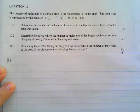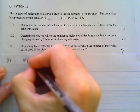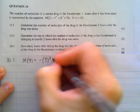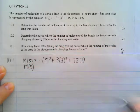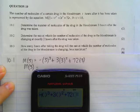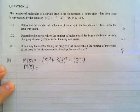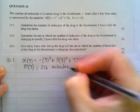For 10.1 it says determine the number of molecules of the drug in the bloodstream three hours after the drug was taken. So for a simple two marks, all we are going to do is substitute 3 into our equation. We're going to get -(3)³ + 3(3)² + 72(3), and we've got 216 as our answer. So 216 molecules.